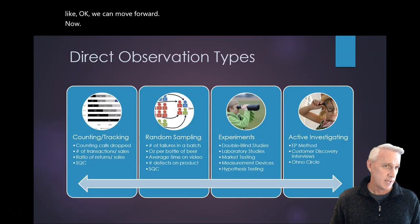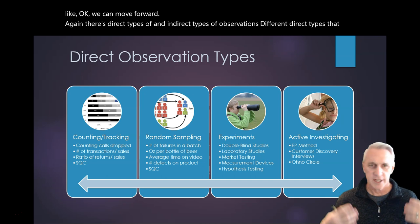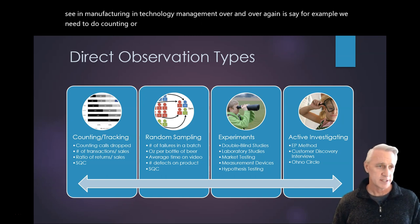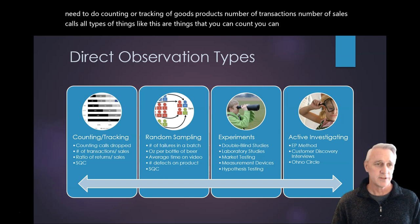Now, again, there's direct types of observations and indirect types of observations. Different direct types that we see in manufacturing, in technology management, over and over again is, say, for example, we need to do counting or tracking of goods, products, number of transactions, number of sales calls, all types of things like this are things that you can count, you can track. That's very direct.